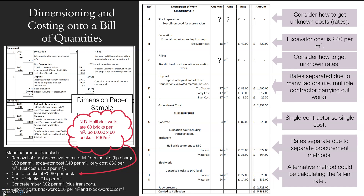Quick workshop on dimensioning onto a bill of quantities. On the left I have all my dimension paper with my abstracts — excavation, site preparation, all under groundwork, then brickwork, blockwork, concrete under substructure. I've separated them out because when I go to my bill — which I can create on Excel or any other format — I have groundwork here and substructure there.